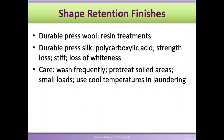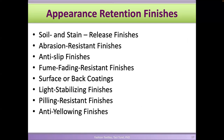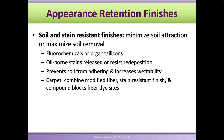With wool, resin is generally used; with silk, polycarboxylic acid is used. Soil and stain-resistant finishes are great for carpets because they get stained and dirty easily. Soil-resistant finish makes it easier to clean the carpet — the soil is not absorbed into the fiber, so when you vacuum it can be removed. Stain-resistant finish prevents staining when you spill something on it. We use fluorochemicals and organosilicons to make a fabric soil-resistant or stain-resistant.